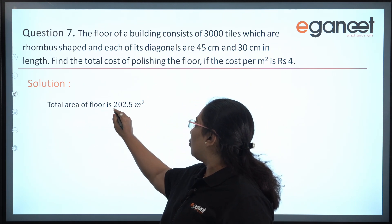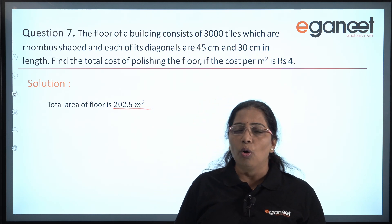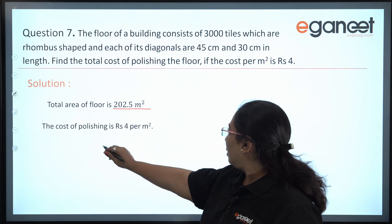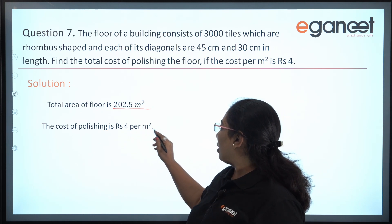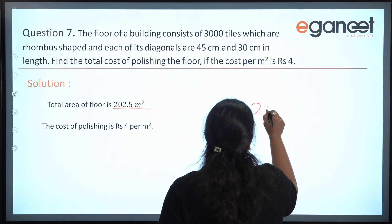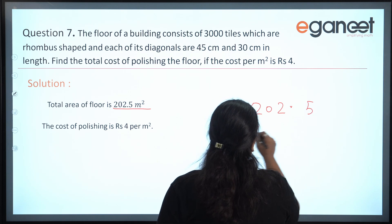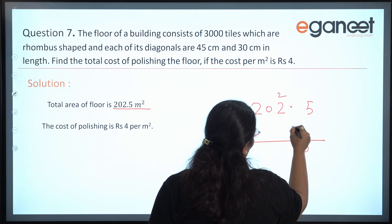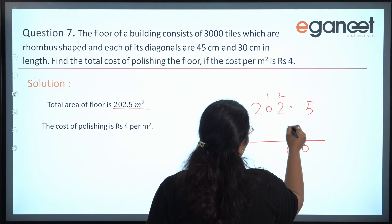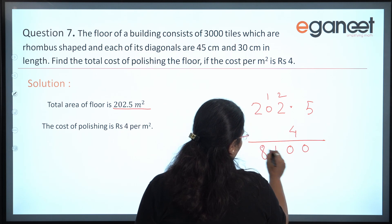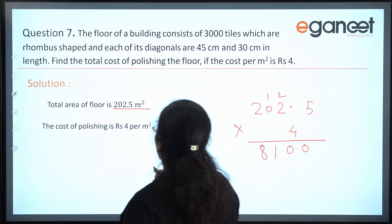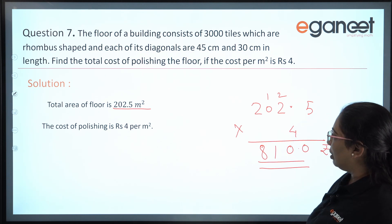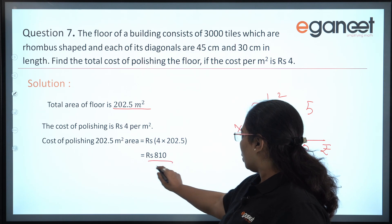The area of the total floor is 202.5 meter square. The cost of polishing is rupees 4 per meter square, so we multiply 202.5 by 4. This equals 810 rupees.